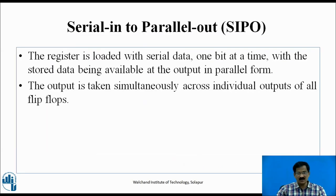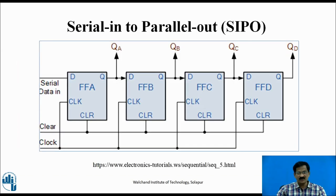Serial-In to Parallel-Out (SIPO): The register is loaded with serial data one bit at a time, with the stored data being available at the output in parallel form. The output is taken simultaneously across individual outputs of all flip-flops — QA, QB, QC, QD — at the same instant. However, for loading the data in serial form, four clock pulses are required.